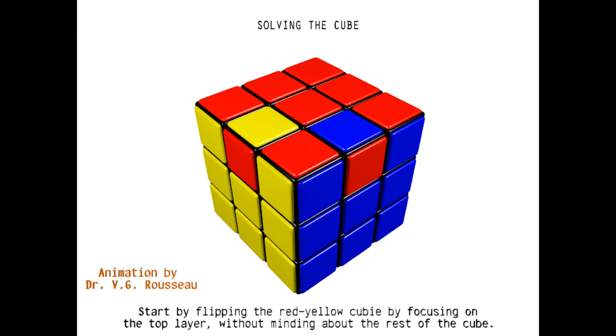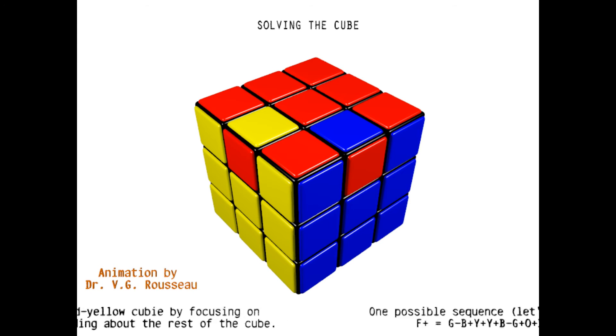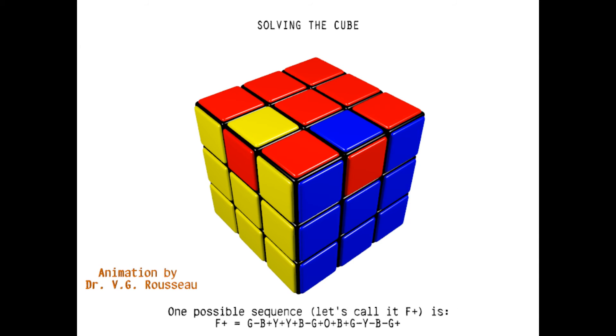This is easy, as this is a usual step that happens when solving one face of the cube. Once again, I assume that you can solve one face, so you should be able to flip the red-yellow cubie without changing any of the other red cubies. There exist several ways to achieve this, and any choice will work as well. In the present case, I choose the following sequence that I call F+, where F stands for flip.